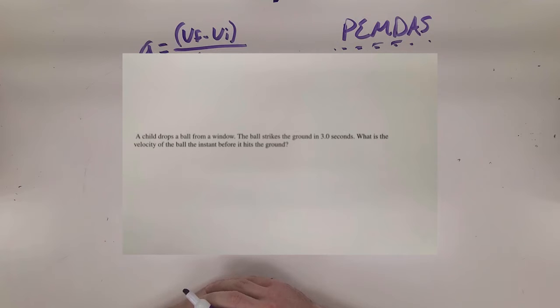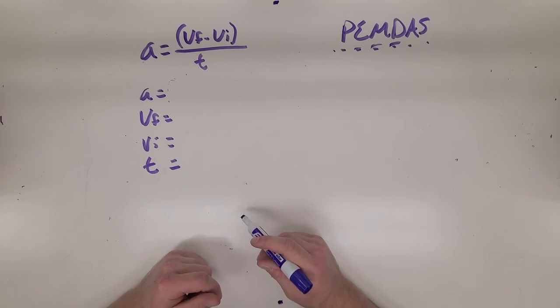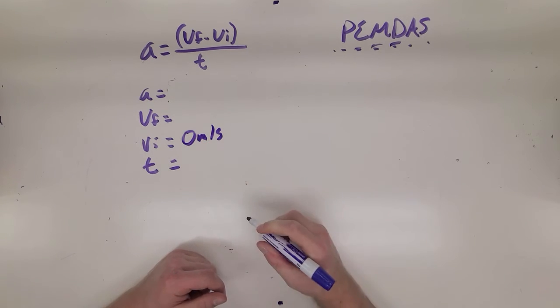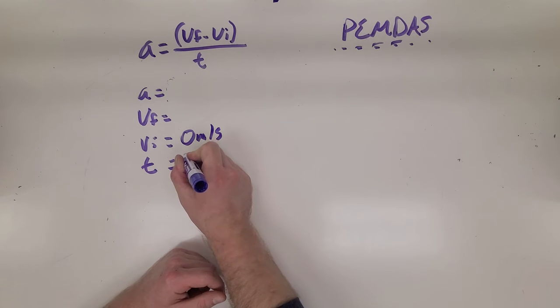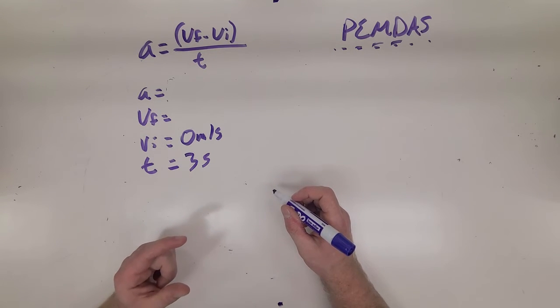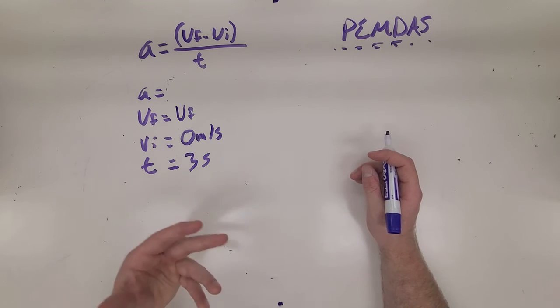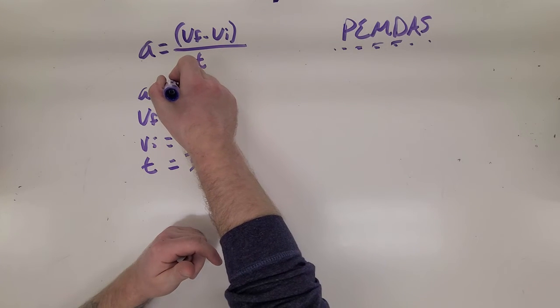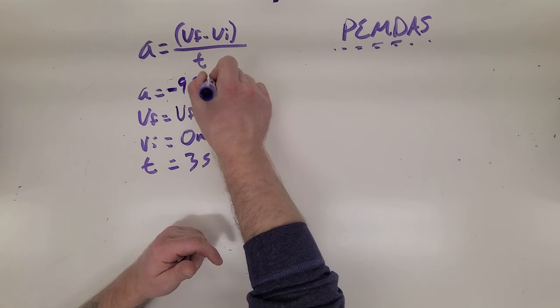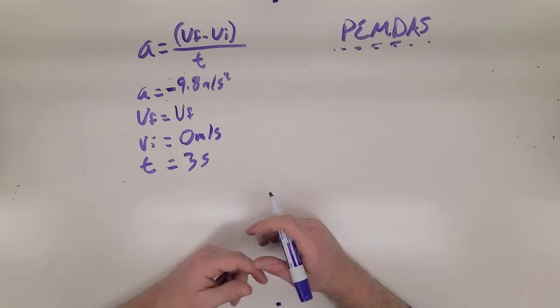Okay, for this one, we have a child dropping a ball from a window. The ball strikes the ground in 3 seconds. What is the velocity of the ball the instant before it hits the ground? In this case, the initial velocity is going to be when the kid's holding the ball in his hand. So this velocity initially is going to be 0. Time it takes is 3 seconds. We want to know the velocity of the ball the instant before it hits the ground. So that's going to be its final velocity we're trying to figure out. And its acceleration, same thing as the last problem. This is a ball that is in free fall or in flight. The only force acting on it is going to be gravity, which pulls things down at about negative 9.8 meters per second squared.